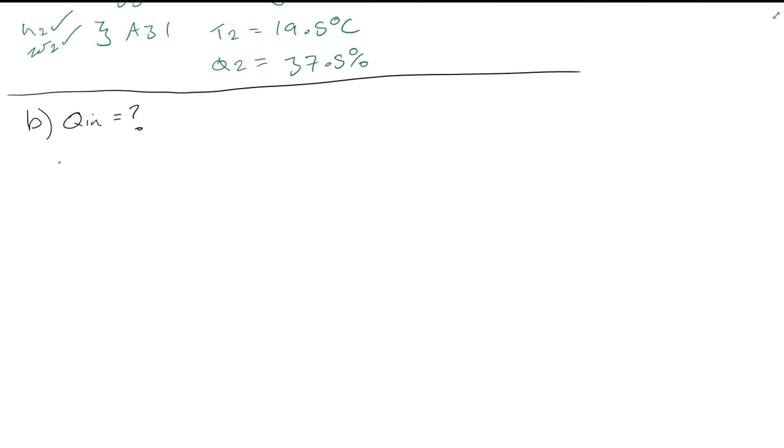Simple equation here. Q in is equal to mass flow rate 2, H2 minus mass flow rate 1, H1. Remember we know that MA1 is equal to MA2. And hence this can simply be cancelled down to Ma times H2 minus H1.